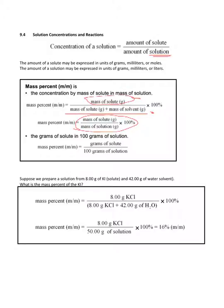Let's try an example. Suppose we want to prepare a solution from 8 grams of potassium iodide and 42 grams of water. Since water is present in the larger amount, it's our solvent. The mass percent would be 8 divided by (42 + 8), or 8 divided by 50, times 100, which equals 16%.